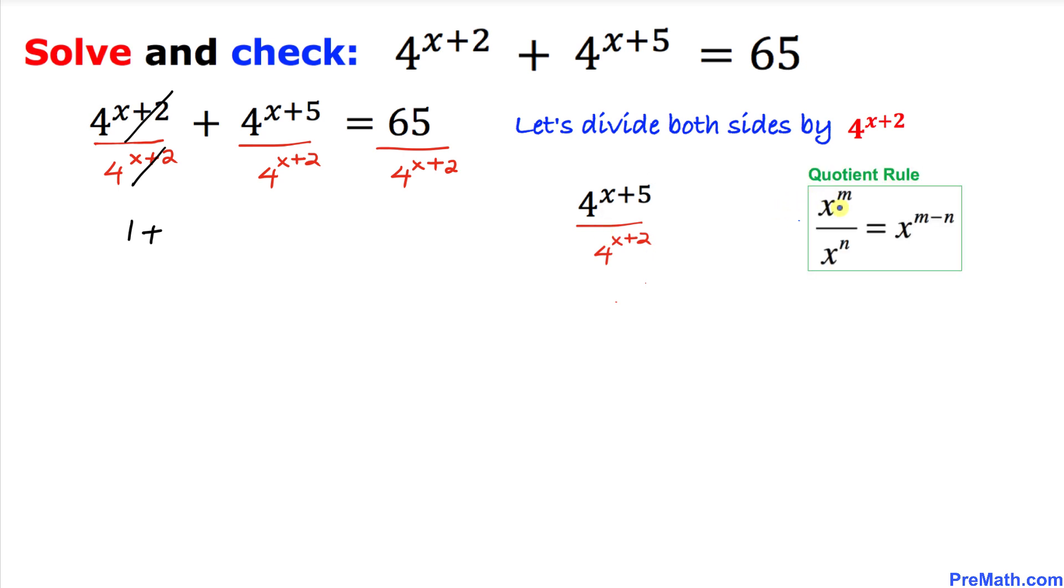We'll use this well-known quotient rule. Here this is our m and this is our n. Let's go ahead and simplify, so that's going to give us 4^(x+5-x-2). If we simplify, that's x+5-x-2, the x and negative x cancel, so we got 4^3.